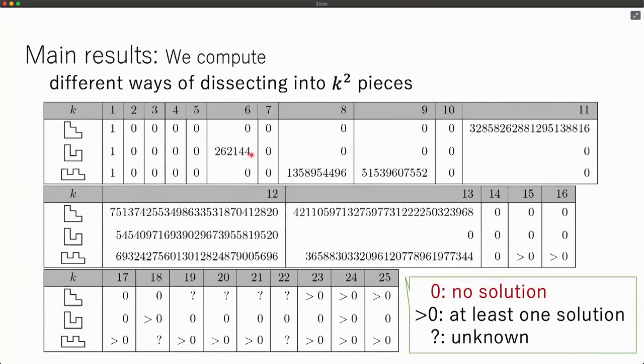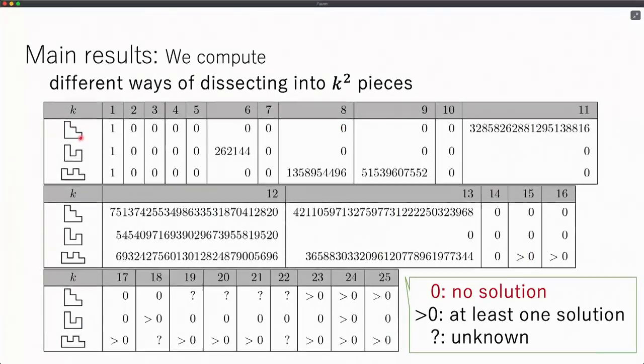This is the whole table. When you see these zeros, we have no reptiles of these sizes. For the staircase pattern, the smallest one is this one. You have to dissect into 121 pieces, and you have this number of different reptiles.